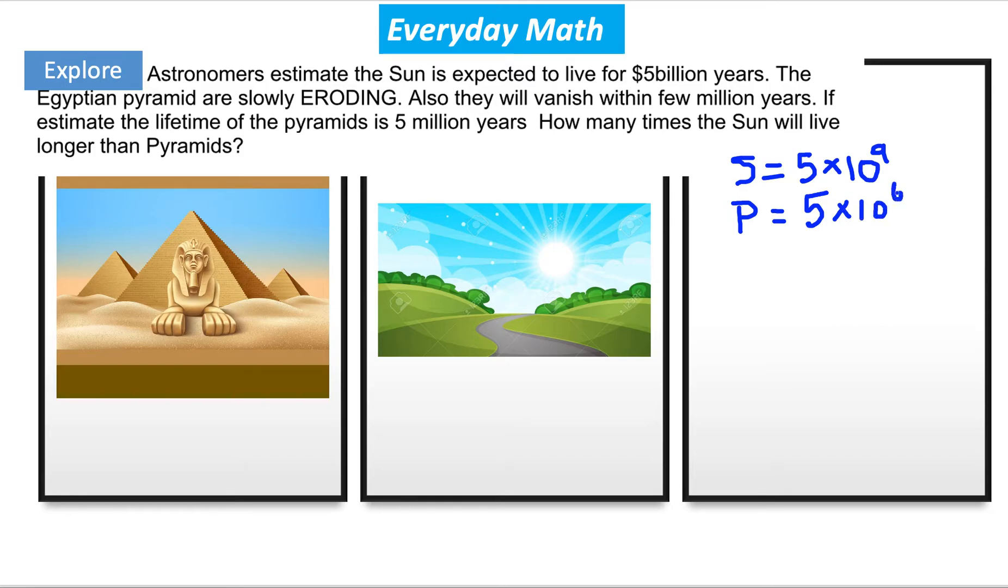6, so all of them have units, the same units. But if we are writing, for example, as a ratio, the Sun over pyramid.